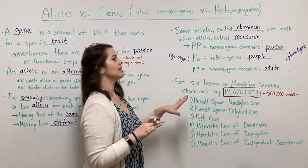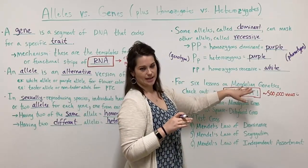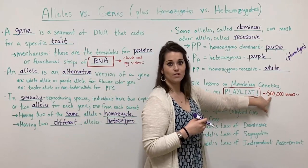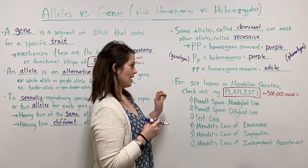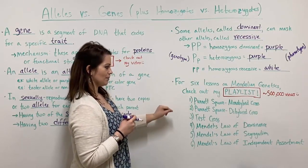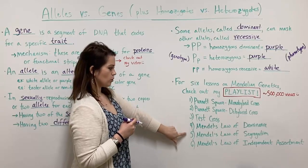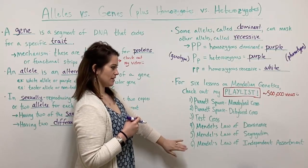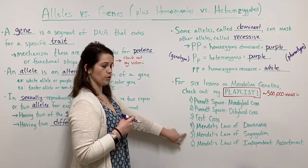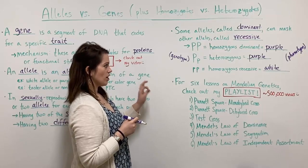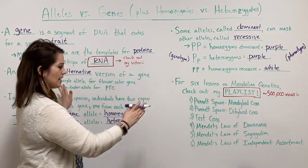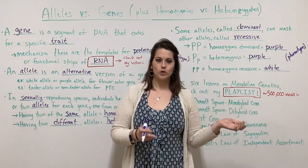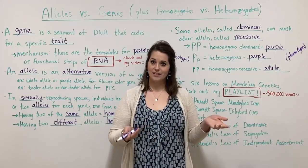I have a playlist on Mendelian genetics with six videos that together have about half a million views. Please check it out if you're studying Mendelian genetics — you can learn about Punnett squares with monohybrid and dihybrid crosses, test crosses, and the three major laws from Gregor Mendel: his law of dominance, law of segregation, and law of independent assortment. Remember you can get a free PDF of the board notes via the tiny URL in the description. Make sure you subscribe, and thank you for watching!